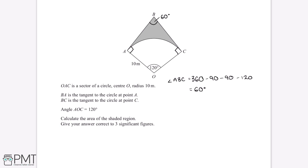The way to do this question is to subtract the area of the sector from the area of the total quadrilateral. So the first thing we'll want to do is work out the area of the quadrilateral.